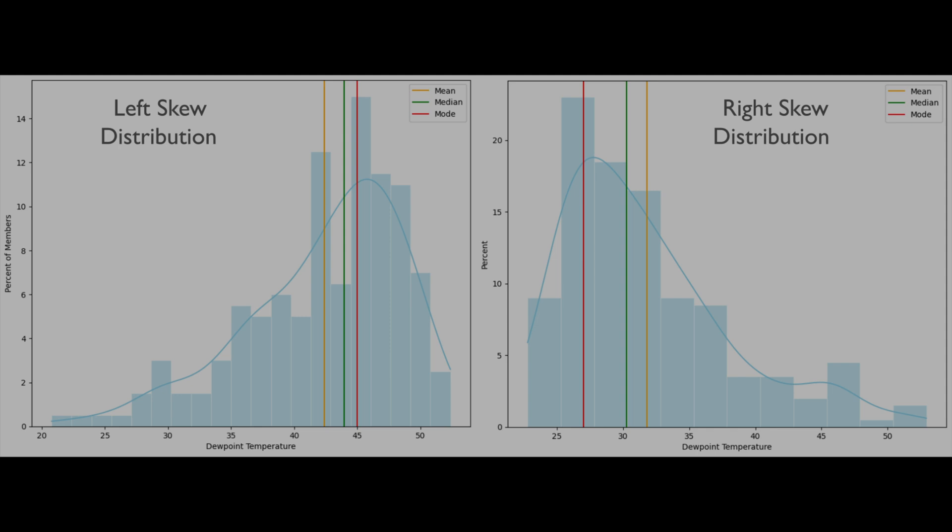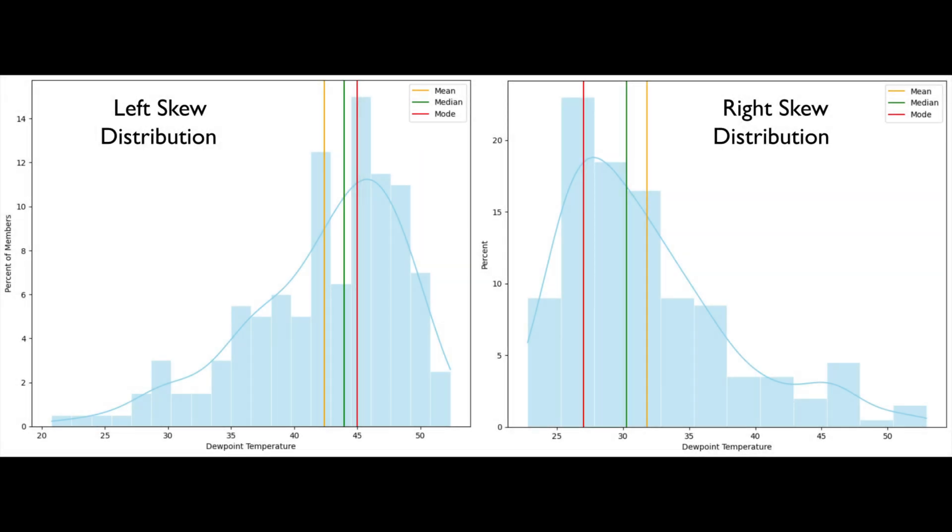One of the most important implications of a skewed distribution is that there is not as much confidence that observed values will fall somewhere in the middle of the distribution. However, we can still deduce useful information from a skewed distribution.